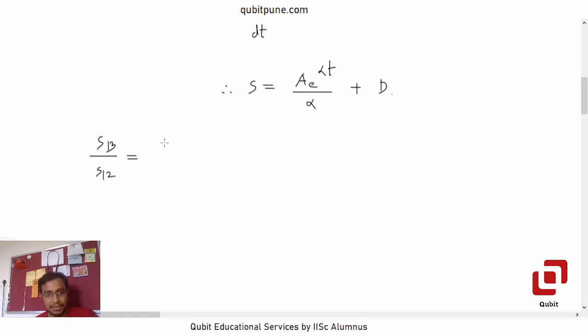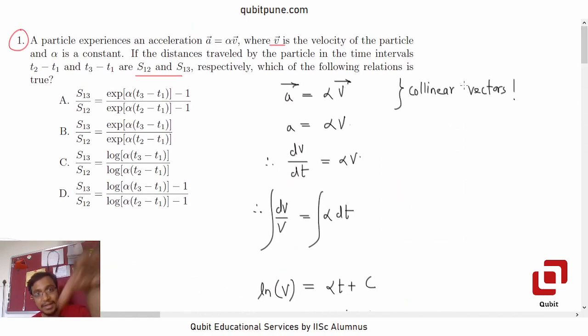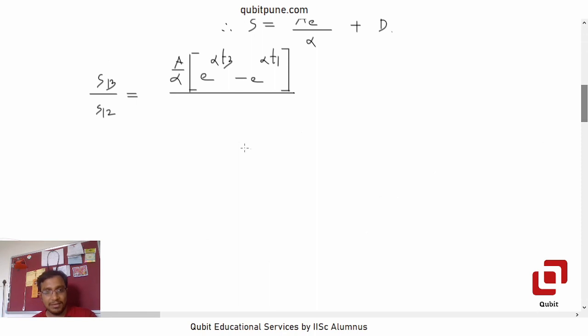Now observe that the arbitrary constant is not going to play any role whatsoever because we know that in definite integration, arbitrary constant has no role to play. So it will be a by alpha into bracket e to the power alpha t3 minus e to the power alpha t1.